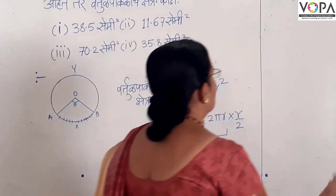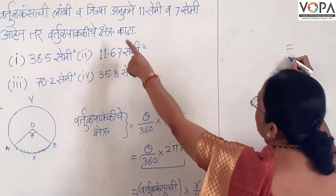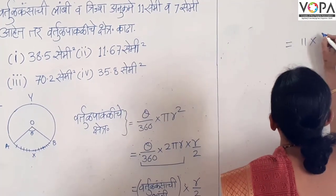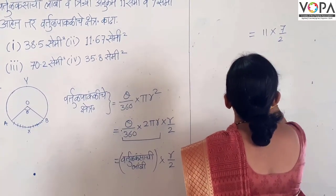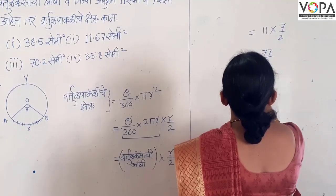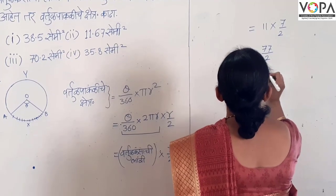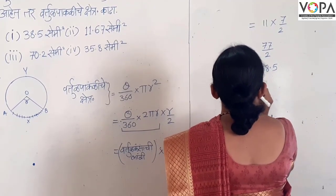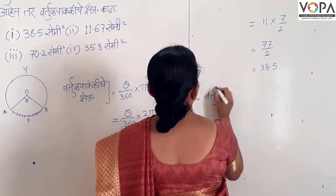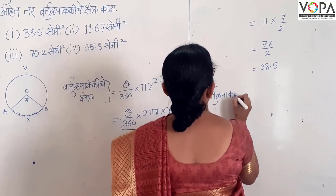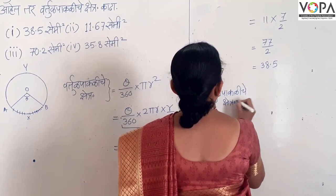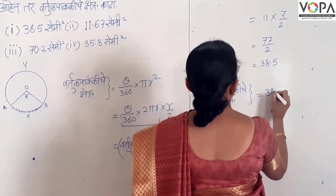Now if we have this, we will cover it with the GUNILA. The GUNILA is applied as a GUNILA. Using this formula, the result equals 38.5.